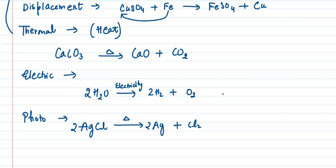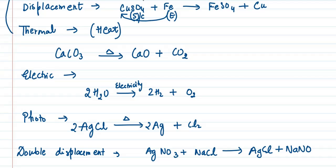Now the next one is double displacement reaction. In displacement, one substance and one element were involved. In double displacement, there must be 2 compounds. Let's say AgNO3 when it reacts with sodium chloride gives AgCl and NaNO3. Ag has replaced Na and they actually exchange their ions.